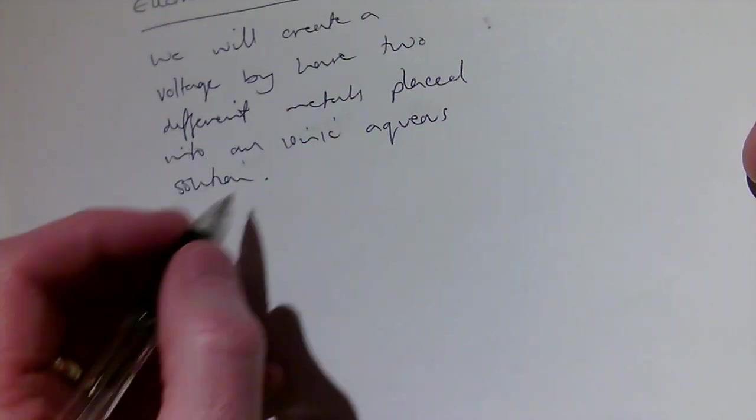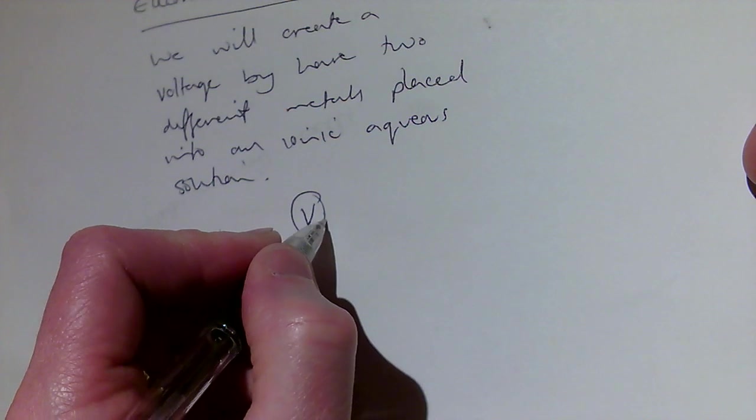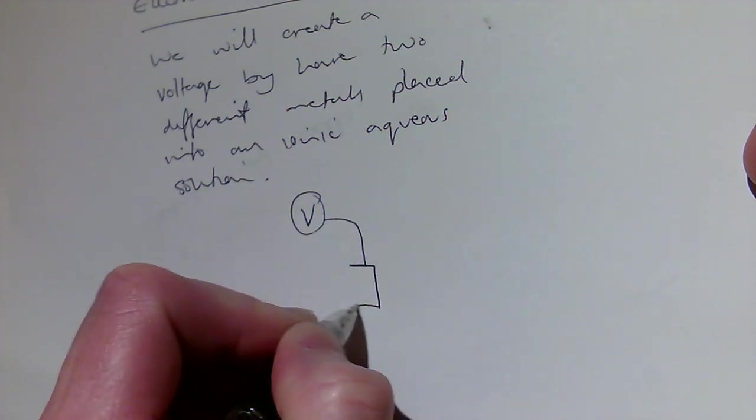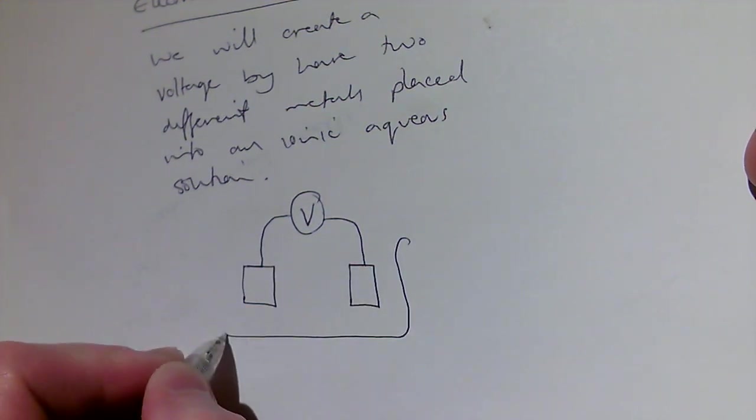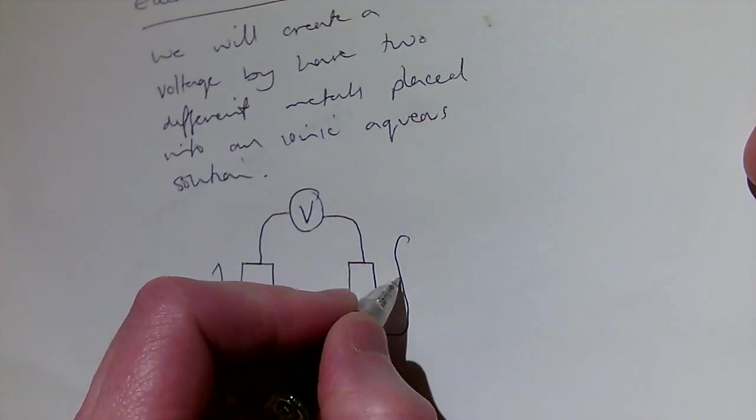Okay, so for example, if I have a voltmeter there, then I have it attached to one electrode there, one electrode there, nice bit of solution there, or a beaker even.